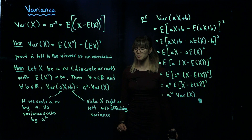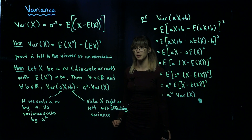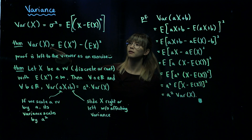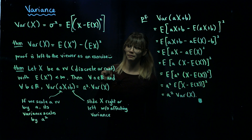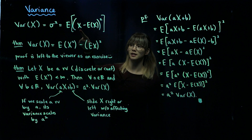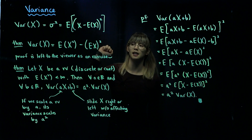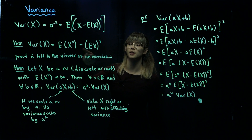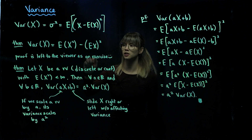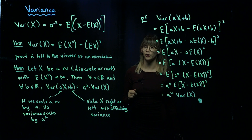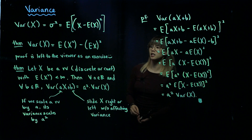We can apply the calculations from the previous video to figure out how to calculate the variance of X. One very useful theorem is that the variance of X can be rewritten as the expected value of X squared minus the square of its mean. So instead of calculating X minus its mean, squaring that, and taking the expected value, we can take the difference of these two expected values.